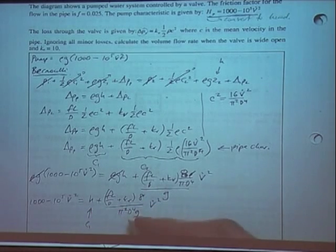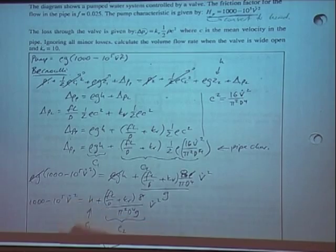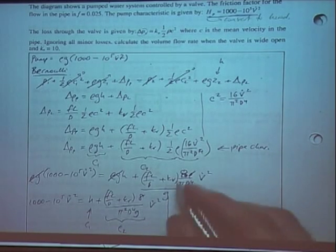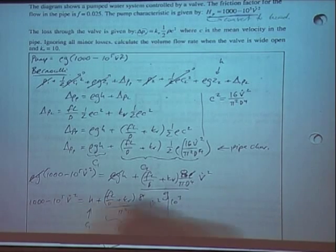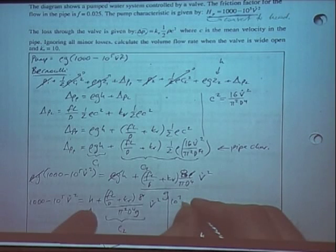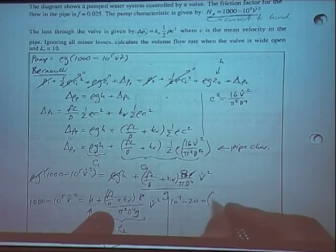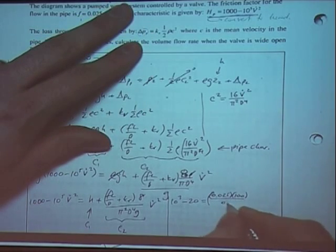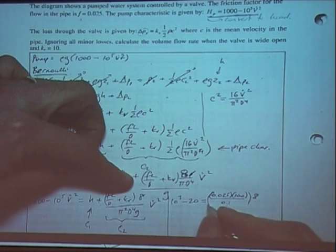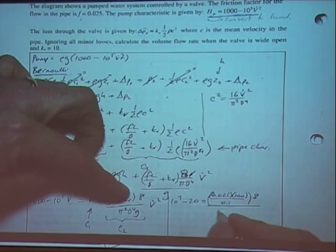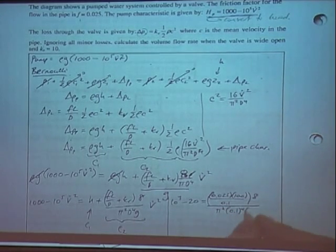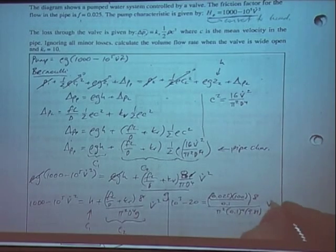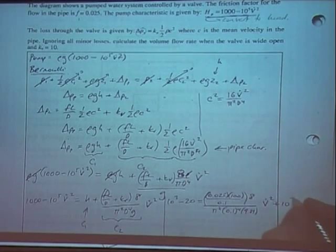This term is our C1 and this is our C2. Rearranging to find V-dot: moving H across gives 1,000 minus 20 on the left. Substituting values — f is 0.025, L is 100 metres, D is 0.1, so fL/D is 25 — times 8 divided by pi squared times 0.1 to the power 4 times 9.81, times V-dot squared, plus 10 to the 5 V-dot squared.